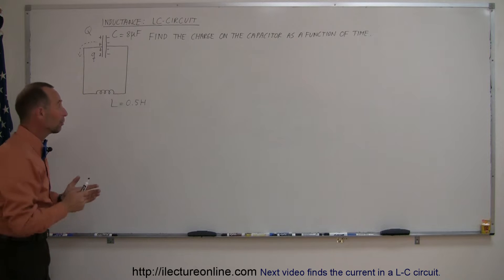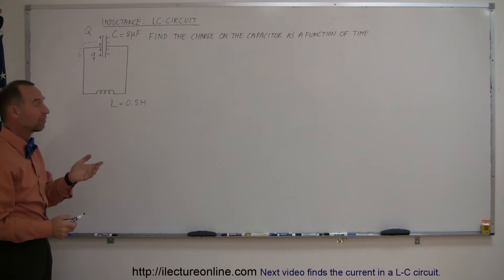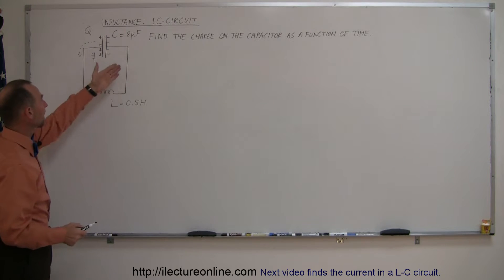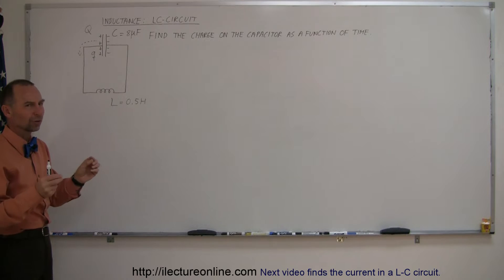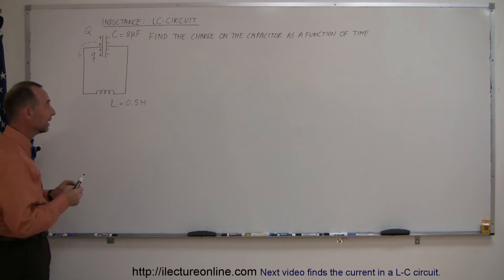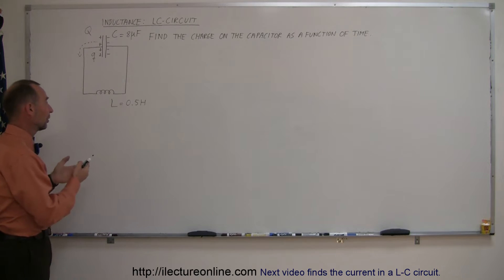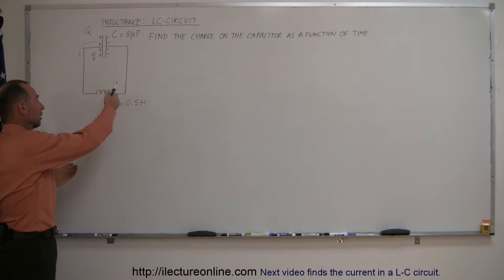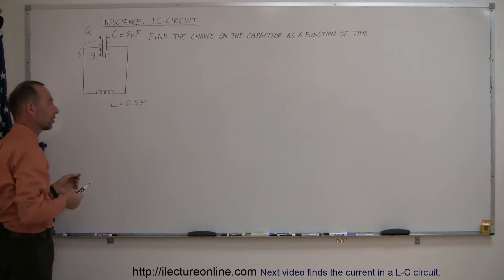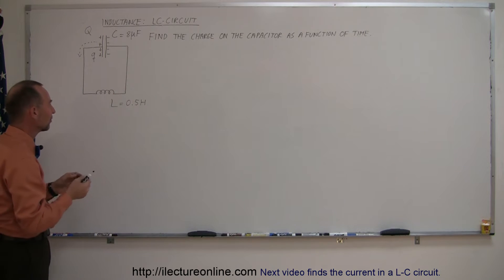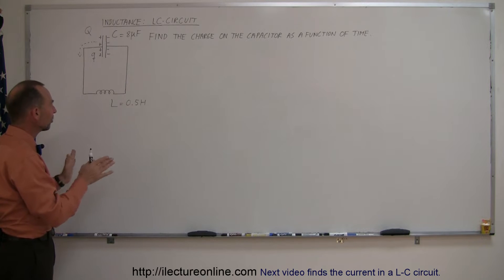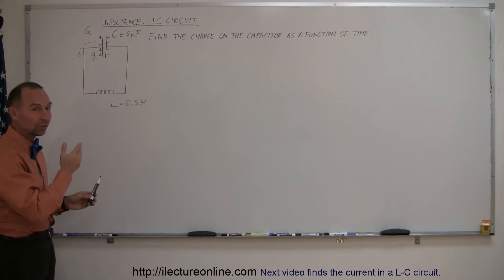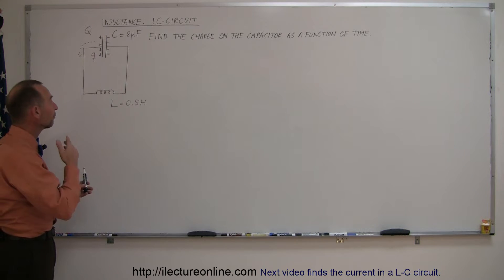If this is a perfect circuit, this could go on forever because there would not be any energy loss, because there's no resistance in the circuit. Of course that's only in theory. In real life, any inductor, any circuit will always have some sort of resistance. But if we think of this as a purely theoretical circuit with no resistance at all, this would continue on forever.